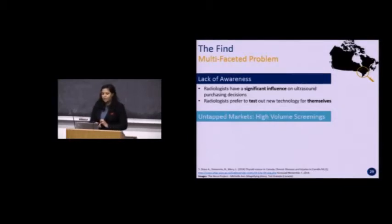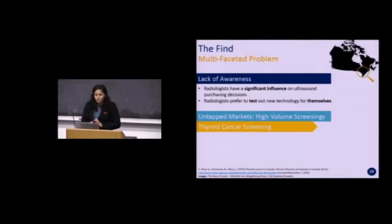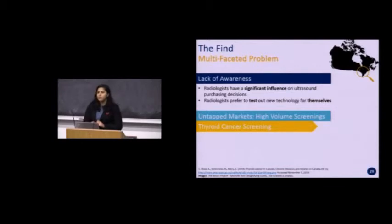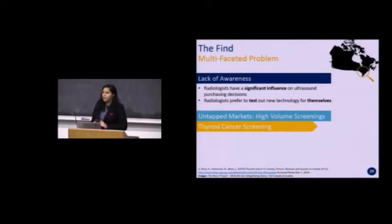In order for Philips to appeal to these radiologists, we needed to identify an untapped market where anatomical intelligence can be particularly beneficial. That led us to a market with high-volume screenings — specifically the thyroid cancer screening market. Thyroid cancer is actually the fifth most common cancer in Canada, with a 44% increase in incidence between 1998 and 2007. This increasing incidence rate is highly correlated with increased ultrasound scans for thyroid cancer, which clogs radiologist and sonographer time for other scans. Philips must address the lack of awareness by tapping into this untapped market.